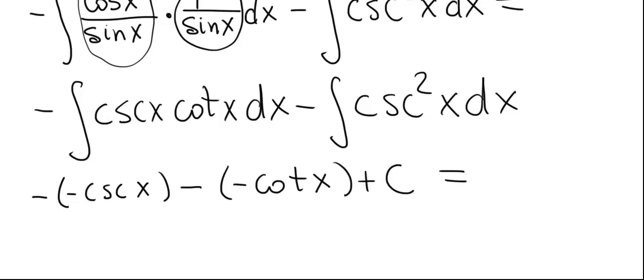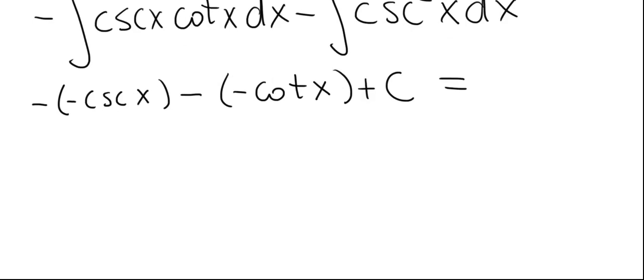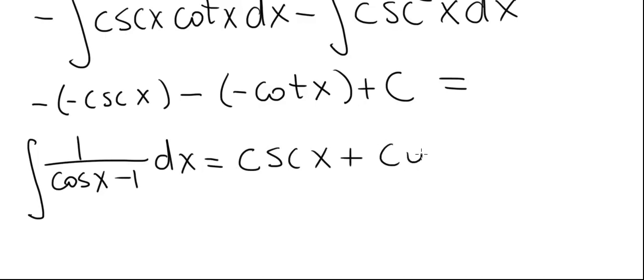Once we get rid of the minuses, we'll have our final answer. So the final answer is the integral of 1 divided by cosine x minus 1 is equal to cosecant of x plus cotangent of x plus constant of integration c.